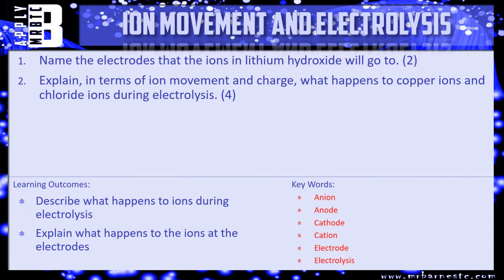Here are a couple of questions for you. First: name the electrodes that the ions in lithium hydroxide will go to — figure out what the ions are and the charges on them. Second: explain in terms of ion movement and charge what happens to the copper ions and the chloride ions during electrolysis — work out which is the cation and which is the anion, figure out which electrode they go to, and say what happens when they get there. Six marks — pause the video and have a go.